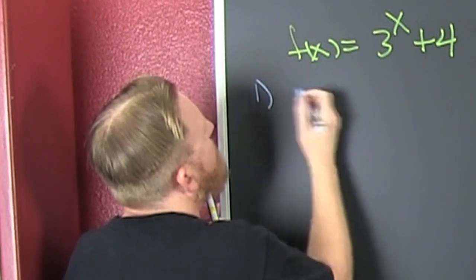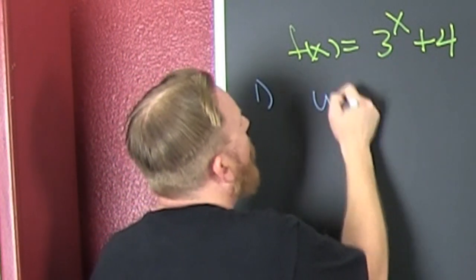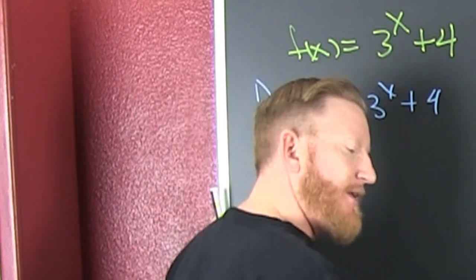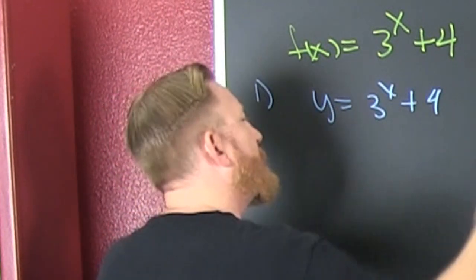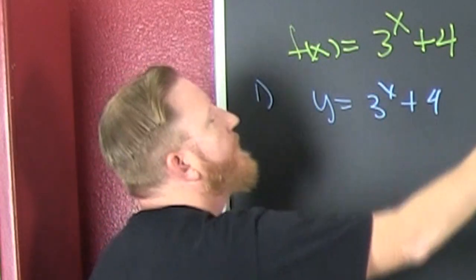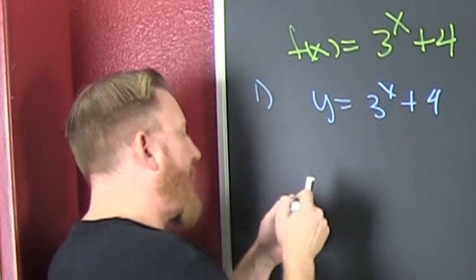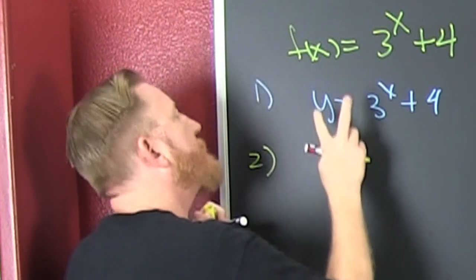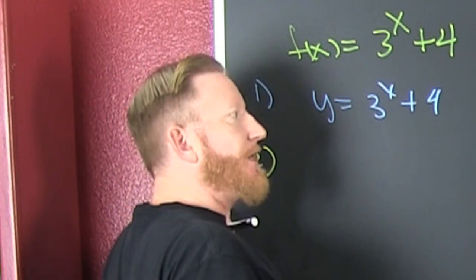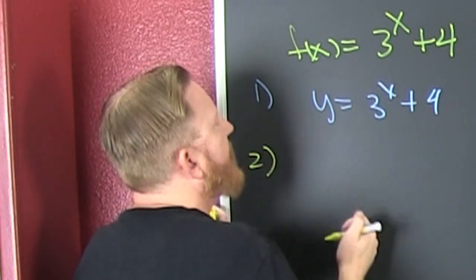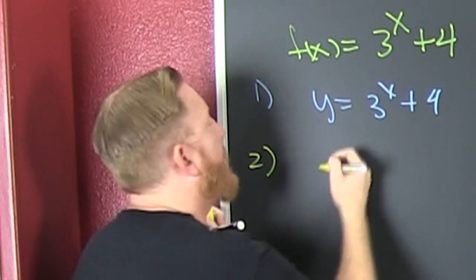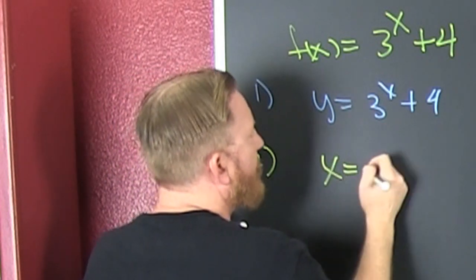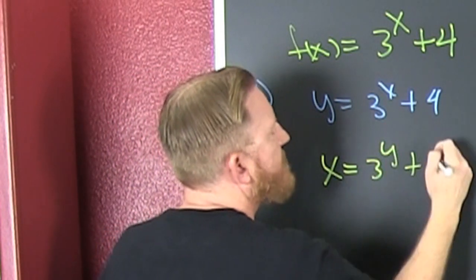First step: we're going to change f of x to y — that's 3 to the x plus four. Step two is interchange x and y. That is the most important step when finding inverses — interchanging the x and y. You're interchanging the domain and the range. So that gives us x is equal to 3 to the y plus four.